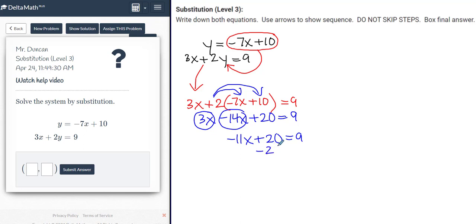I will subtract 20 on each side. Those cancel. So I have negative 11x is equal to, let's see, 9 minus 20. That's going to give me negative 11, which is nice because when I divide by this negative 11 times x, the way you get rid of multiply is to divide by a negative 11 on each side.